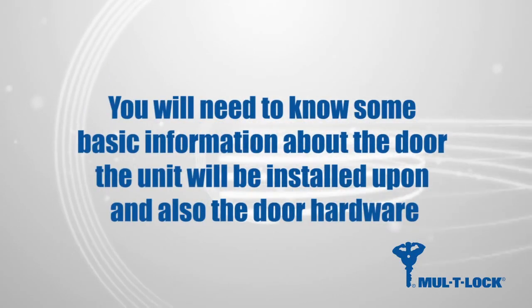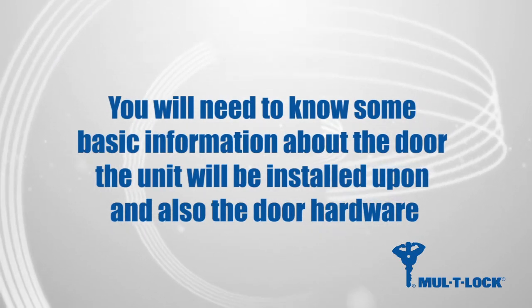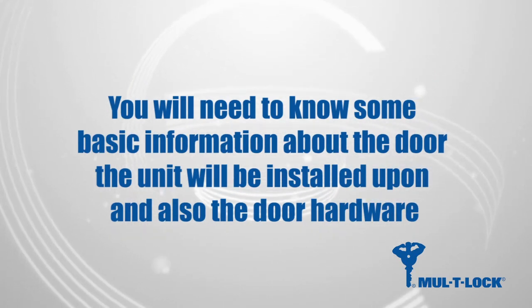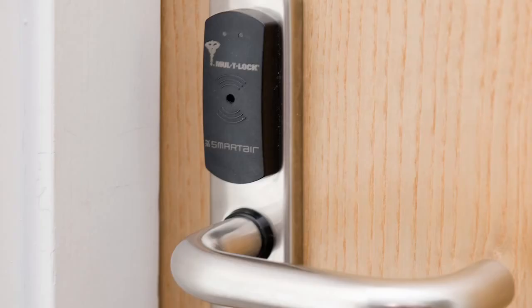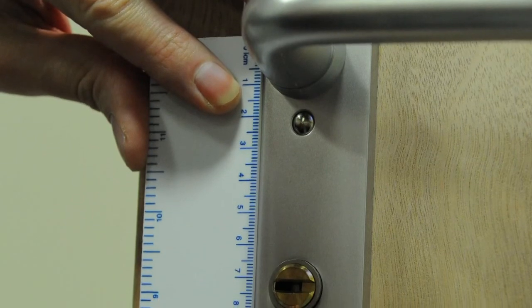To ensure you order the correct type of smart air handle set, you will need to know some basic information about the door the unit will be installed upon and also the door hardware. Smart air units can be supplied with or without a cylinder option. If smart air is to be installed on a door requiring cylinder override, you will need to know the centers of the lock case. The most popular option is 72mm, however others are available.